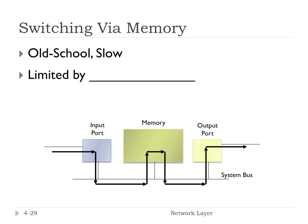Switching via memory was implemented by first-generation routers — basically regular computers with switching software under direct control of the CPU. Instead of being special-purpose computers, which is what high-performance routers typically are now, packets are copied into system memory and then copied out: input port to memory, memory to output port. Because of this, speed is very limited by the bandwidth of the memory. It takes two bus crossings per datagram, making it pretty slow — old and slow, but simple.